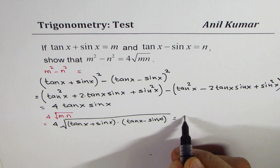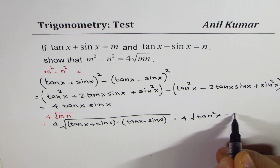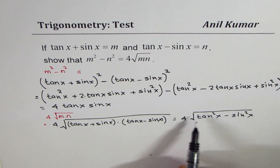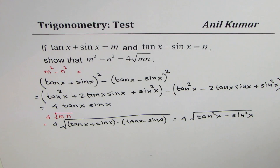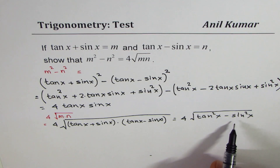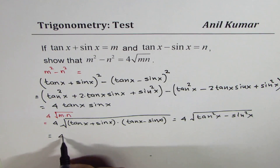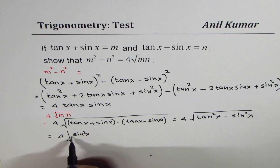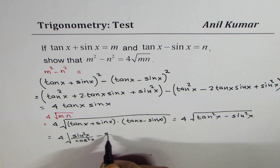This is of the form (a plus p)(a minus p), so I can write this as tan squared x minus sin squared x. We only need to show that this square root part equals tan x sin x, and then we are done. So let's write tan in terms of sin and cosine and simplify.